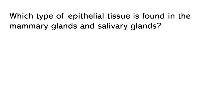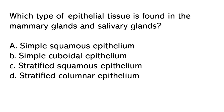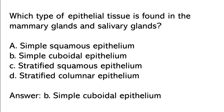Which type of epithelial tissue is found in the mammary glands and salivary glands? Simple squamous, simple cuboidal, stratified squamous, stratified columnar. So the correct answer is option B: Simple cuboidal epithelium.